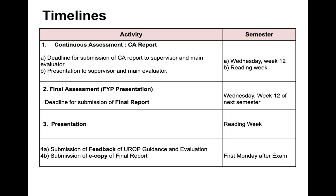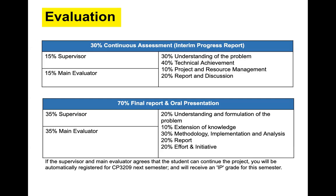If your supervisor or examiner suggests changes, you can make them, but your grade is not conditional on those changes. The evaluation scheme for UROP and FYP is now exactly the same — we are canonicalizing it to make it easier for all staff and students. The report is submitted during Week 12 and assessed during reading week. 30% of your grade comes from your first semester involvement.